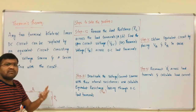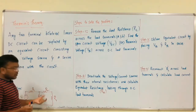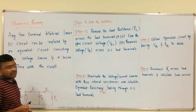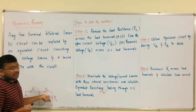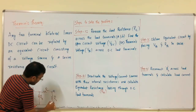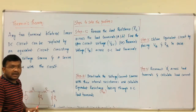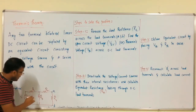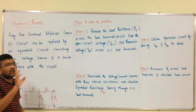Any two-terminal bilateral DC circuit means what? For example, the examiner wants to know the value of the current through a particular branch. What is the value of current through R4, which is present between two terminals? This is terminal A, this is terminal B, or the examiner wants the current through another branch — terminal 1 and terminal 2. In any case, we are getting two terminals.